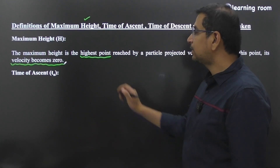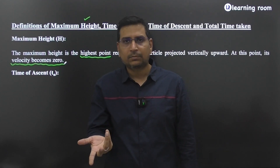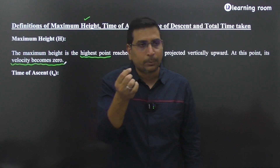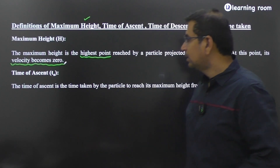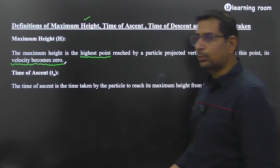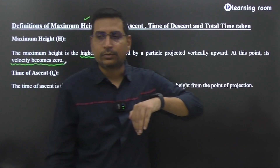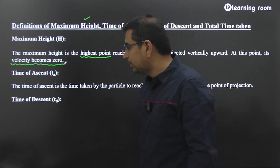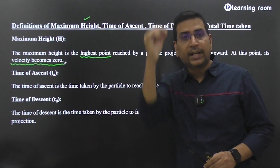The next term is time of ascent, derived from 'ascending.' When the object is traveling upward, the time taken by the object to travel from the point of projection to the maximum height is called the time of ascent. The opposite of ascent is descent — so time of descent is the time taken by the particle to fall back from the maximum height to the point of projection.